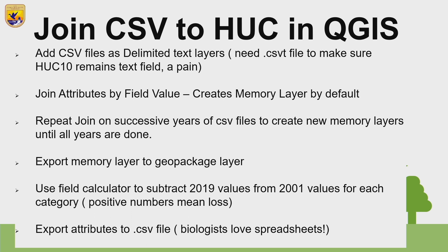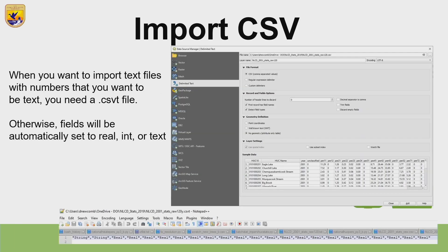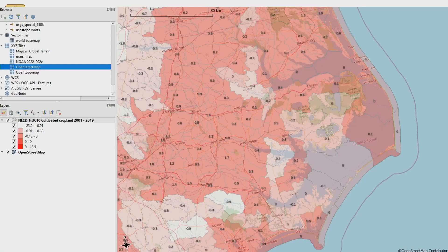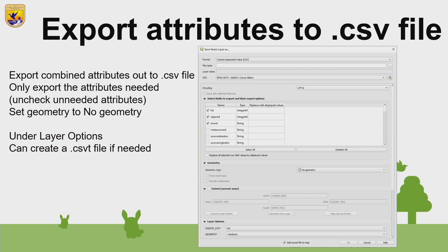I also used the field calculator inside QGIS attribute tables to do the subtraction of 2019 from 2001 to compute change — though it would have been better to do it the other way, because right now gains show as negative numbers. Once everything was done, I exported it all to a CSV file, because biologists love spreadsheets. The result is something you can pull up in any GIS that reads a geopackage — including Esri, who have supported it for years. You can select whatever attribute you want to display colors and values. To export to CSV, just use file save as, choose CSV, and select which attributes to export.